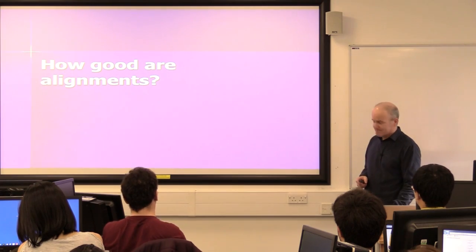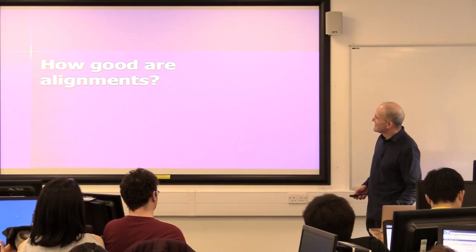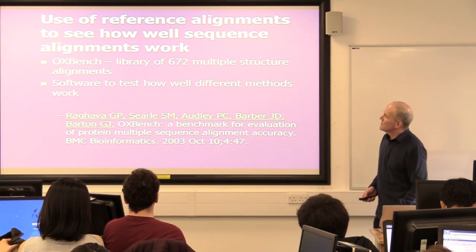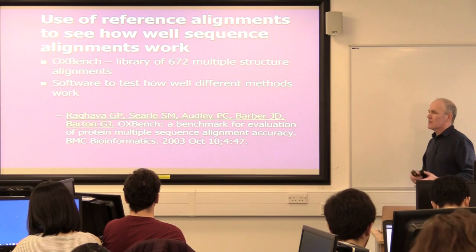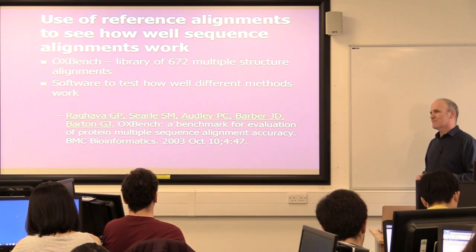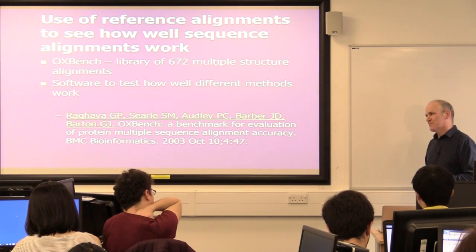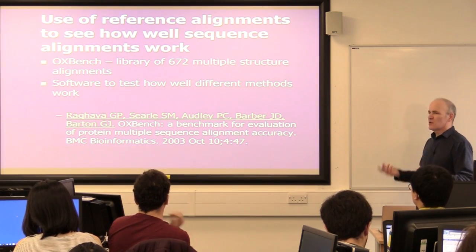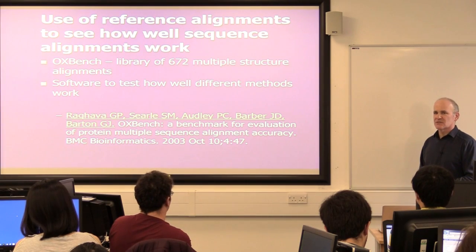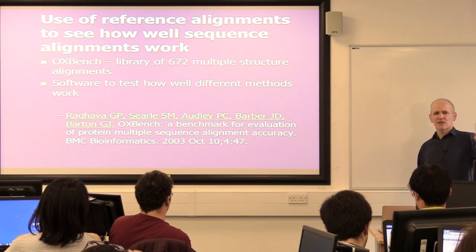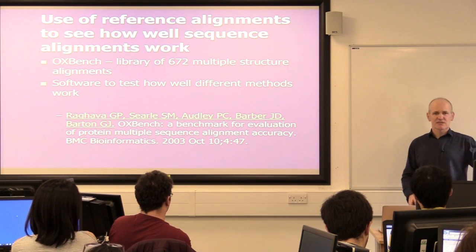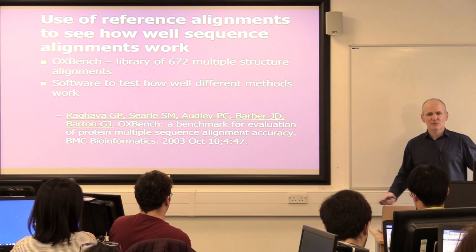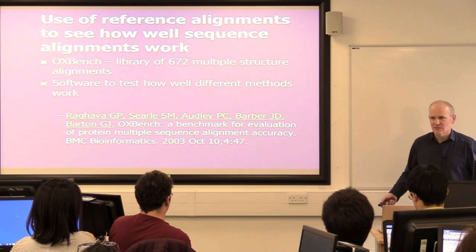How good are alignments? We can generate multiple alignments, and it's useful to know about this because if somebody tells you to use a particular alignment method because it's the best, it's useful to ask: what's the evidence? Why should I use that method?